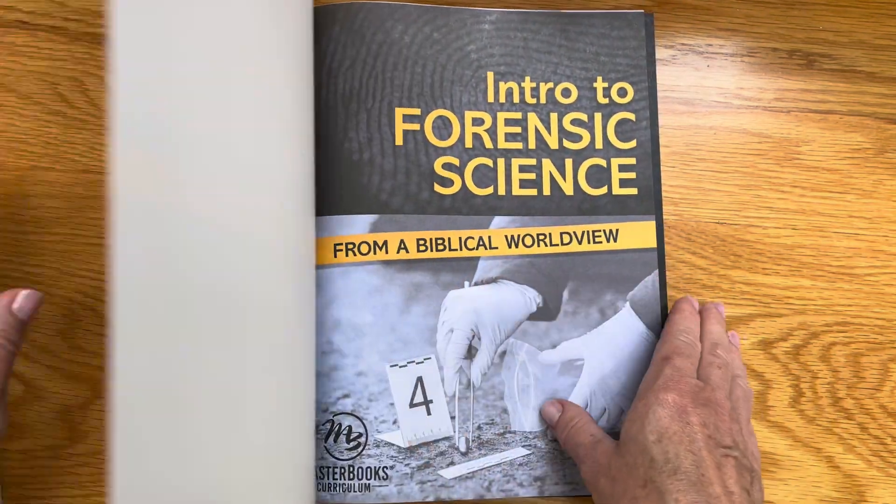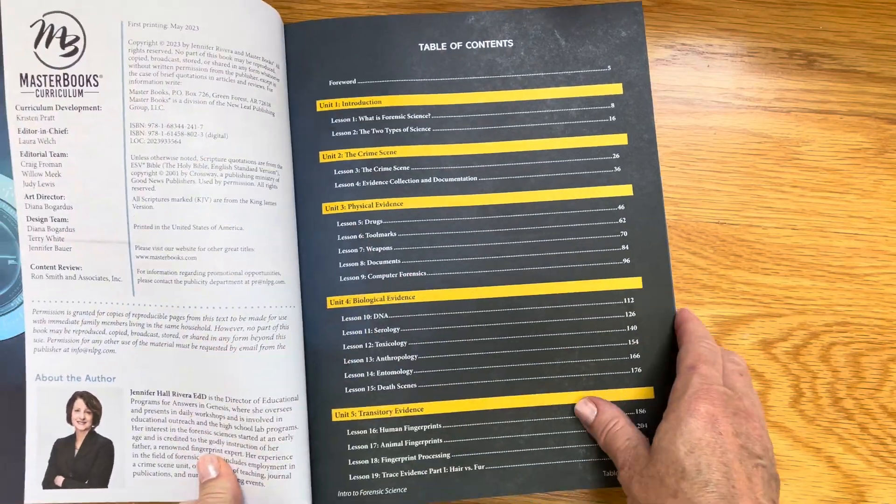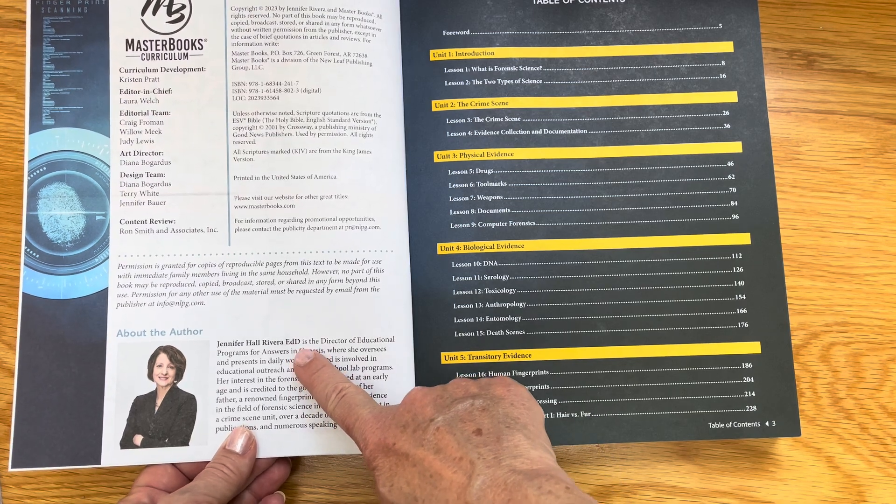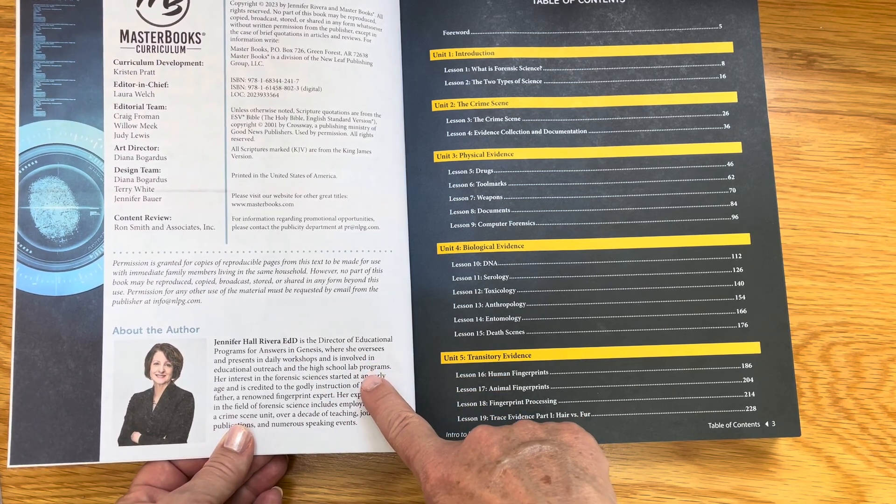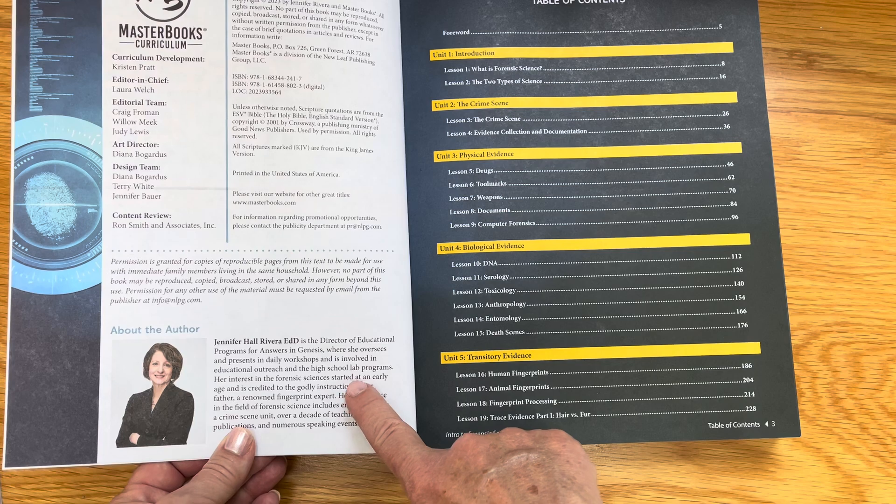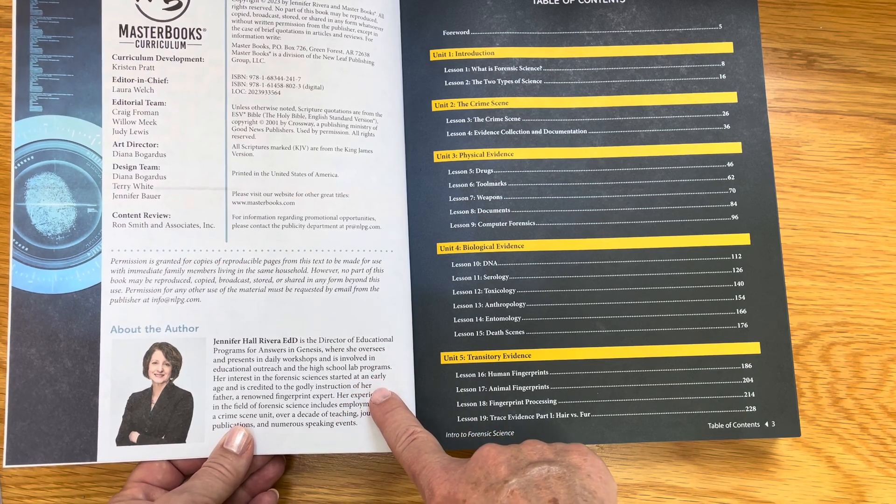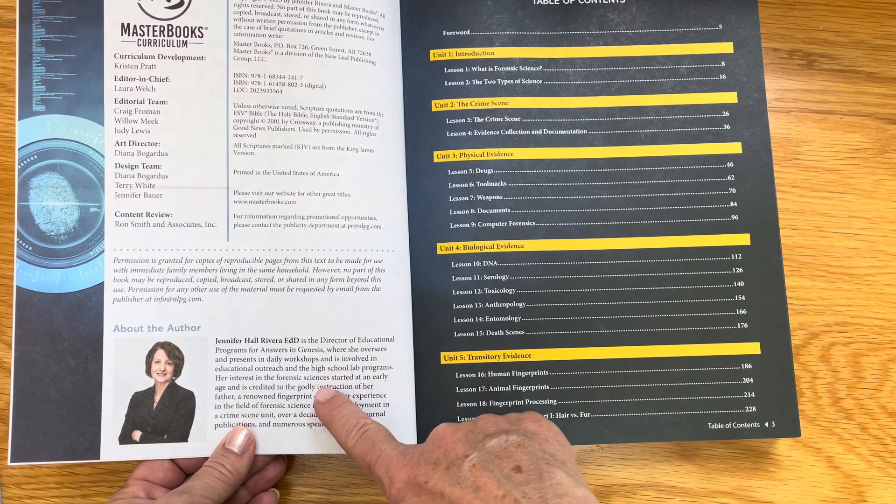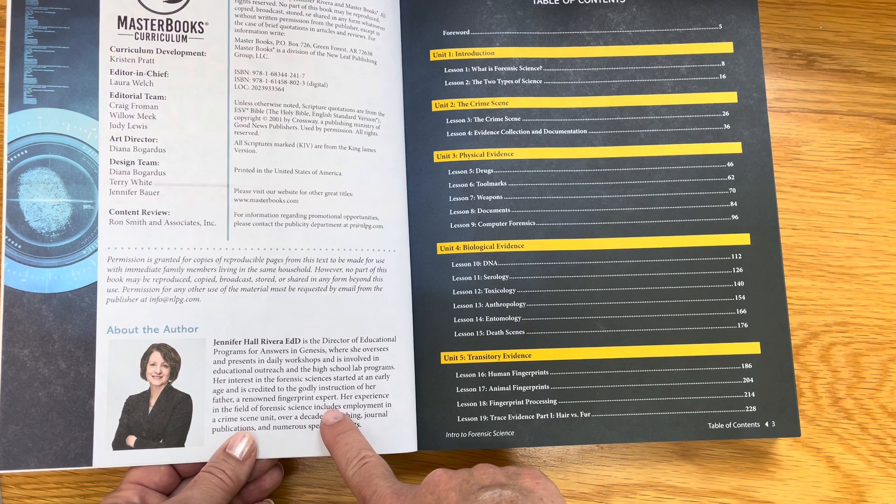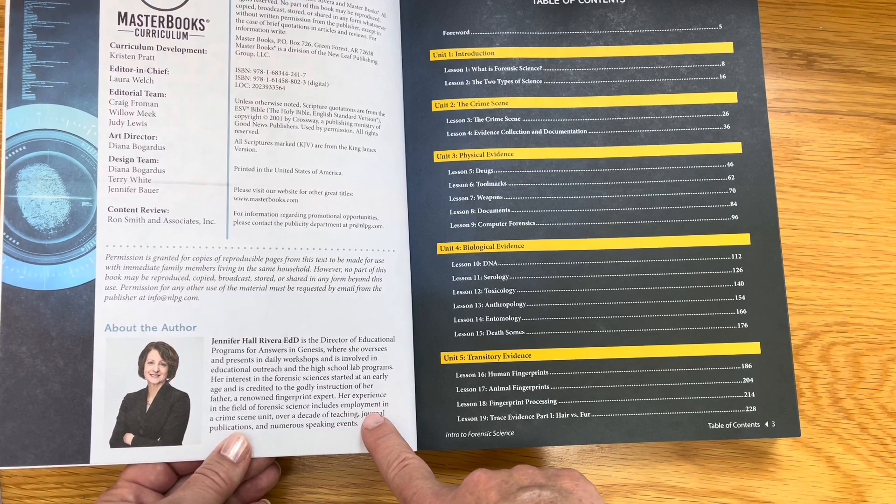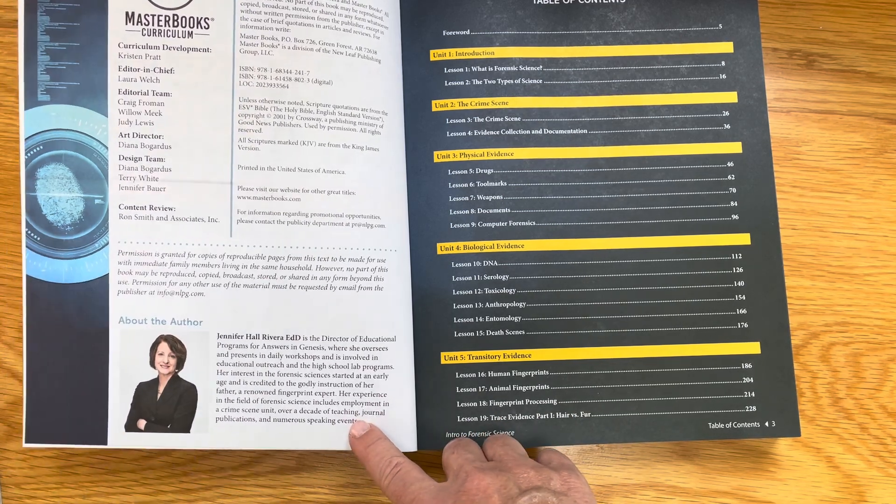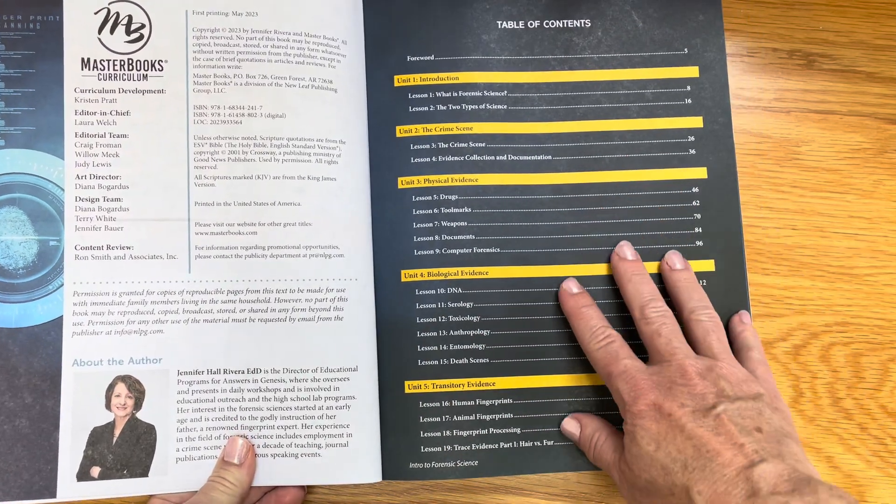The student textbook has a description about the author. She has a PhD in education, works for Answers in Genesis, and has been involved in educational research and high school lab programs. She has had an interest in forensic science since an early age and her father was a renowned fingerprint expert. She has had experience and employment in a crime scene unit as well as teaching and writing.